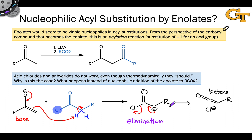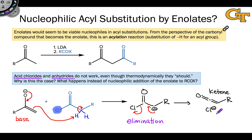Elimination occurs in preference to substitution when we use acyl chlorides as the electrophile, as well as anhydrides. This seems to severely limit the scope of these acyl substitutions using enolates. We need to generate an anion that is more stable than an enolate, and we're running out of options quickly. If Cl minus won't work and a carboxylate won't work, what does? We'll look at that in the next video. The next step down the oxidation ladder is an ester, and this reaction does work with certain types of esters.